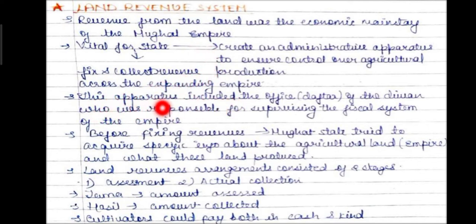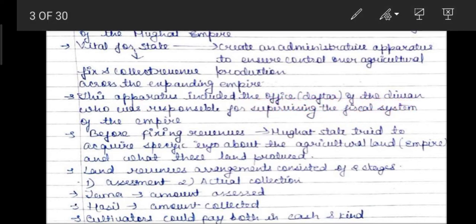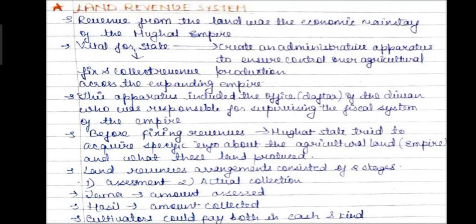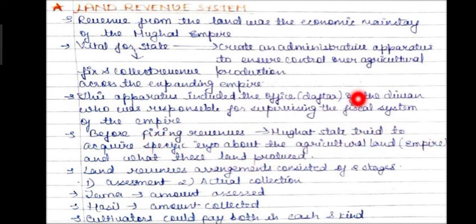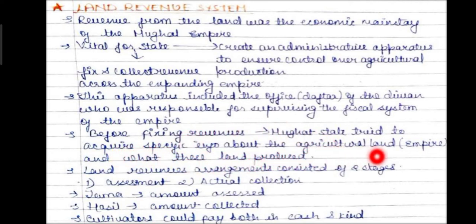This apparatus included the office — Daftar — of a Divan, who was responsible for supervising the fiscal system of the empire. Before fixing revenues, the Mughal state tried to acquire specific information about the agricultural land of the empire and what these lands produced. A survey was created to gather information about agricultural land and its produce.